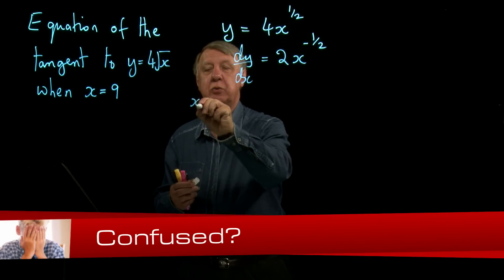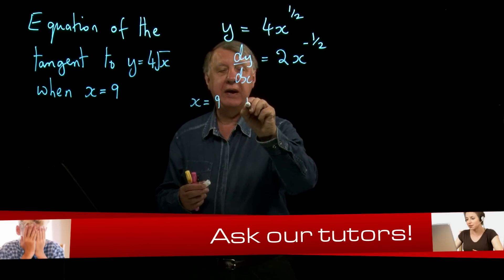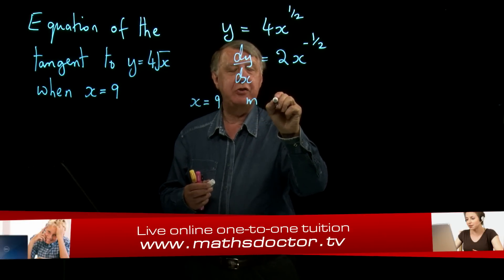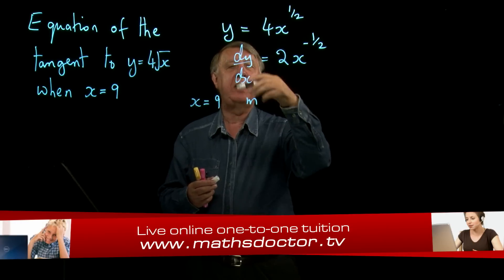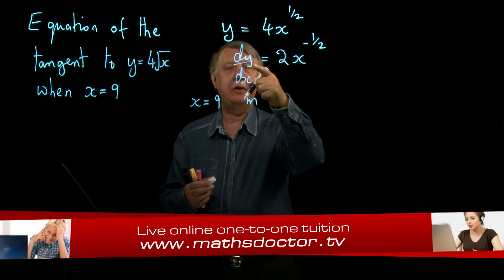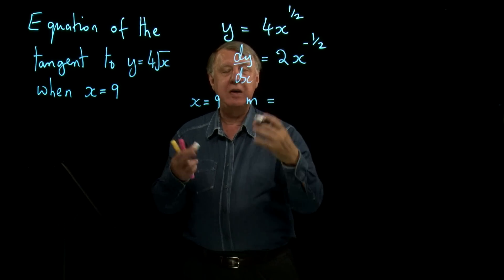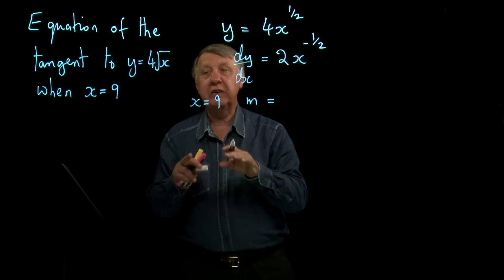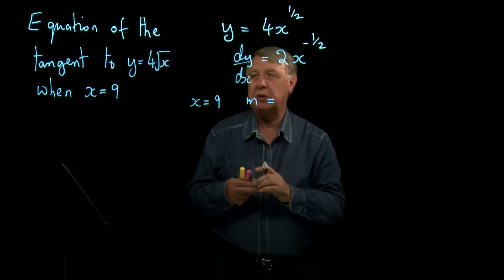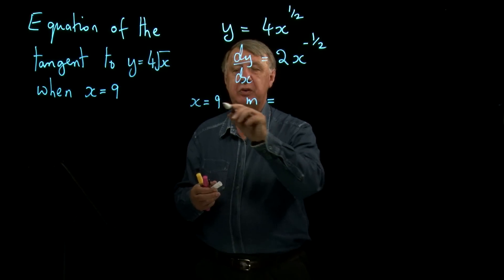So if x equals nine, remember the convention I'm using: once I put in a number for x, I call the gradient m because m stands for the gradient at the point that I'm working at. So if we put nine into here...